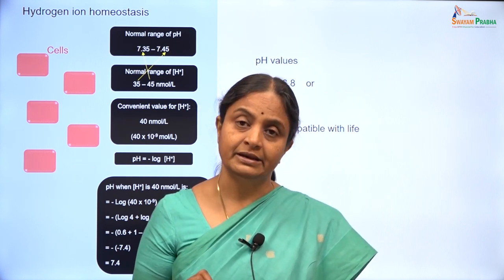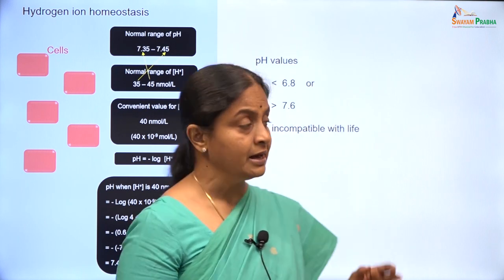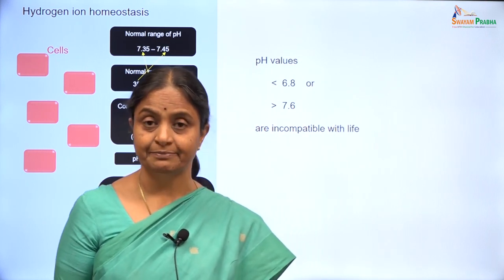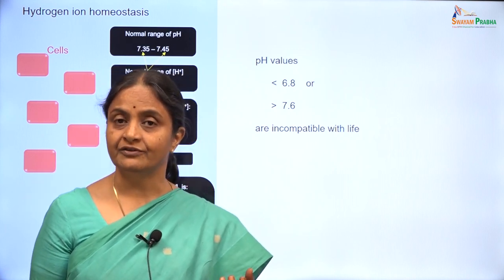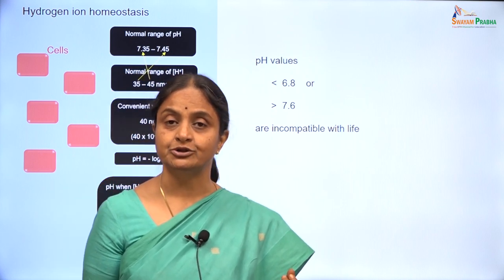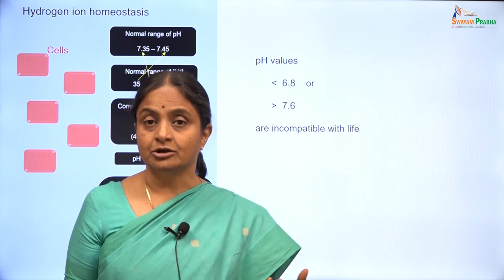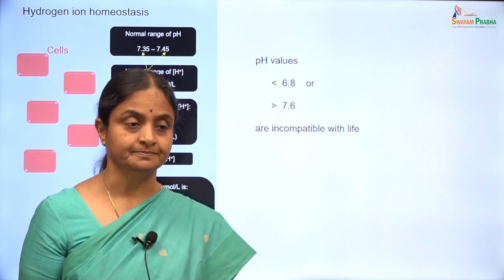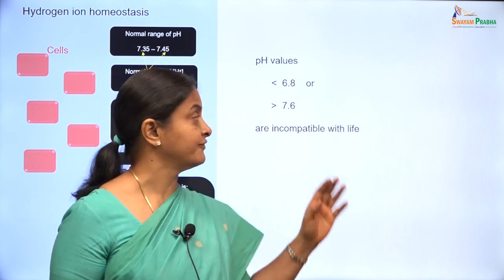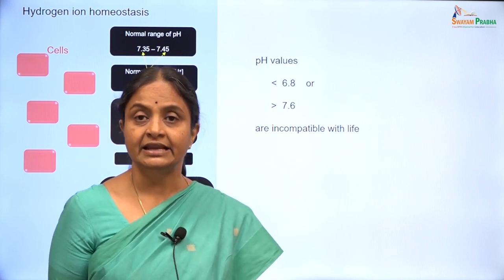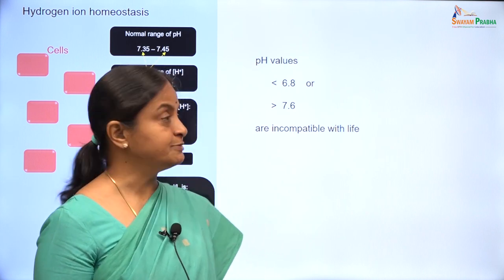A pH less than 6.8 during life is not reported. Likewise, the highest level of pH compatible with life is 7.6, but at least one physician has recorded 7.7 in a patient with concomitant respiratory and metabolic alkalosis. So the pH range compatible with life is 6.8 to 7.6. At a pH of 6.8, the hydrogen ion concentration would be 116 nano equivalents per litre, which is about 4 times the normal value.